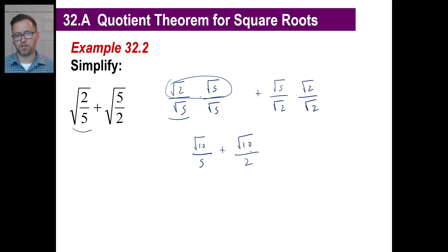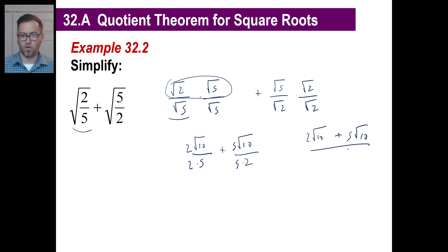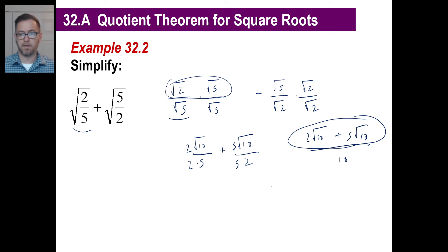We want one fraction, so let's go ahead and slop these together. The common denominator obviously is 10. So two times this, and then two times that. And this will be five times this, and then five times that. So we have two square root of 10 plus five square root of 10 over 10. Well, these are like terms. Two of something plus five of something is seven of something, and that's our last answer.